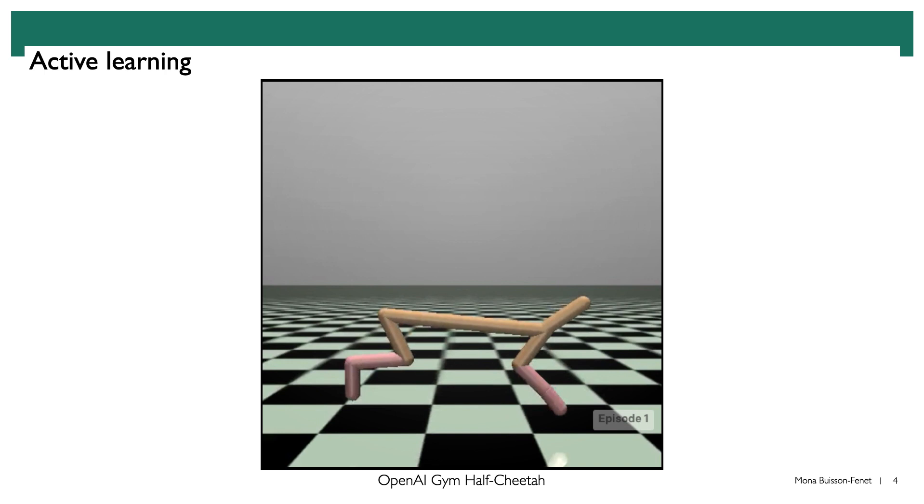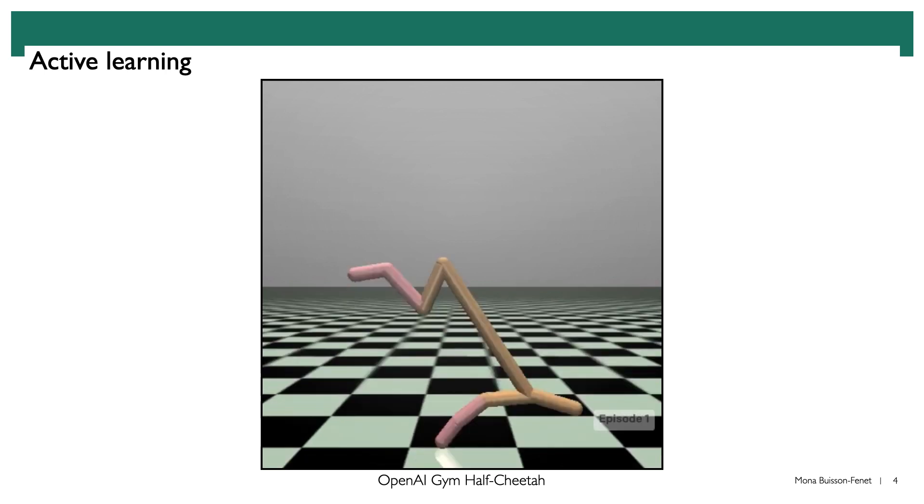For example, let's focus on this half cheetah robot here. Let's say we have gathered some data of the robot in this configuration just standing on both its legs and we have learned its behavior there. If this was a static system, then the state-of-the-art on active learning for static systems would tell us, well, we don't have any data of the robot in this configuration standing on its front leg.